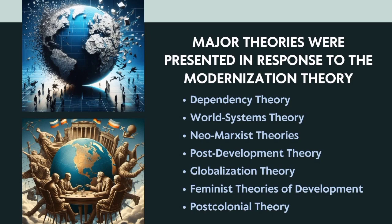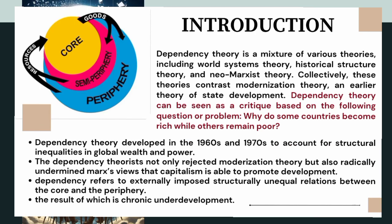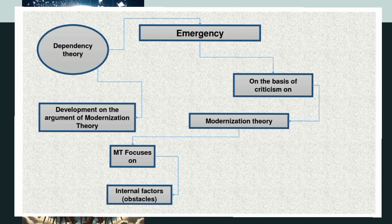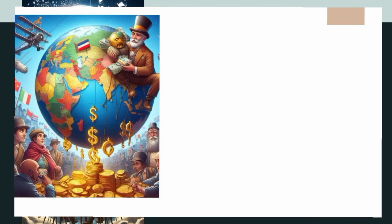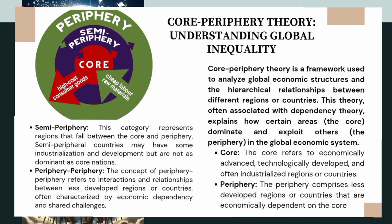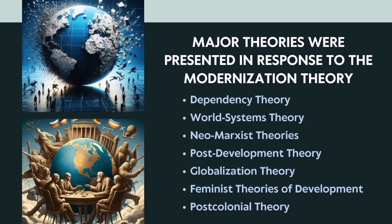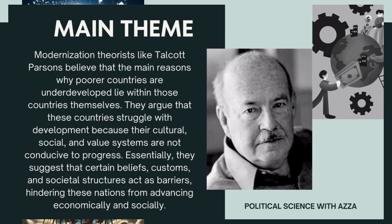The dependency theory was developed as a response, arguing that internal cultural or traditional factors are not the primary reason for underdevelopment. Instead, it points to external factors and the relationship between core and periphery nations — core meaning developed countries and periphery meaning poor countries. Dependency theory argues that rich core countries exploit periphery nations through unequal trade and investment practices. This challenged modernization theory's focus on internal factors while neglecting external factors.